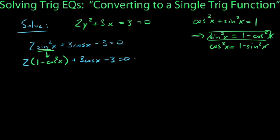Now what we can do is write this in quadratic form. We're going to distribute this, so we get 2 - 2cos²x + 3cosx - 3 = 0.